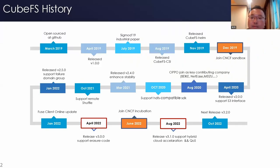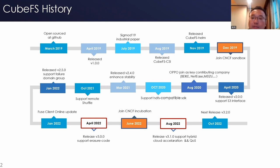KubeFS went open source in March 2019, and released version 1.0 in April. At the end of 2019, we joined the CNCF Sandbox. In 2020, we updated several times and supported diverse interfaces, including S3 and POSIX. In 2021, we released version 2.4, which enhanced stability.